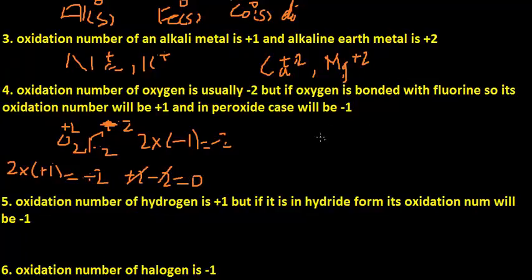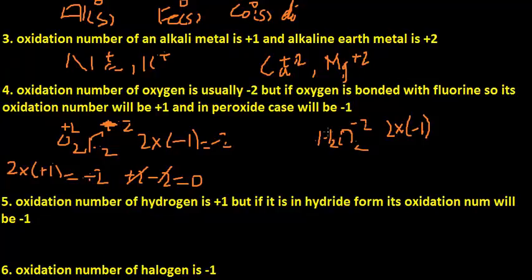In the peroxide case, in H₂O₂, oxygen has a minus one oxidation state. Two oxygens are present, so 2 × (−1) = −2. Hydrogen usually has plus one oxidation state, and two hydrogens give 2 × (+1) = +2. The sum of plus two and minus two is zero.